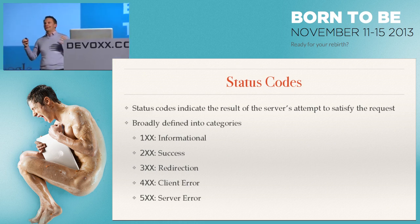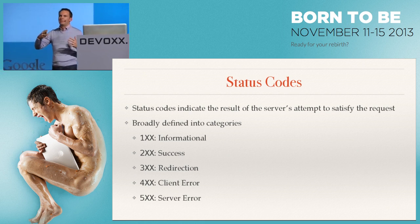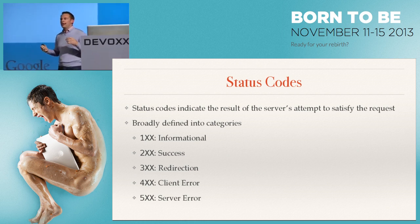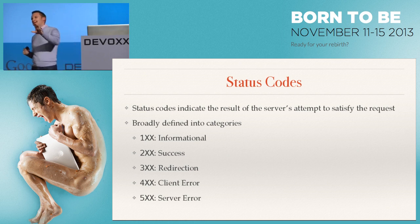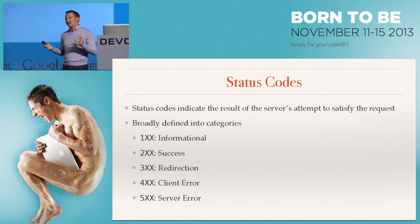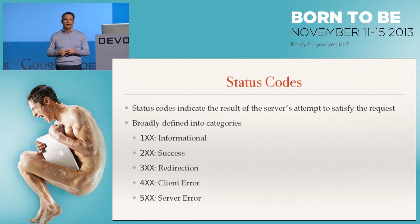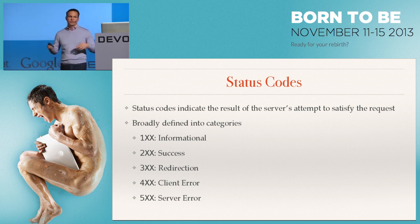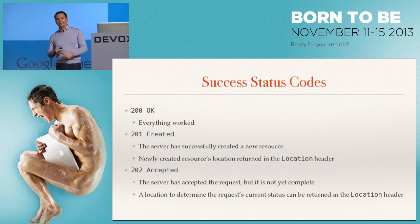Now, how do we tell the caller exactly what's happened? A server needs to be able to indicate back to the client exactly what has happened. HTTP status codes are broadly defined into five categories: 100s for informational, 200s for success, 300s for redirection, 400s for something the client has done wrong, and 500s for something the server has done wrong.